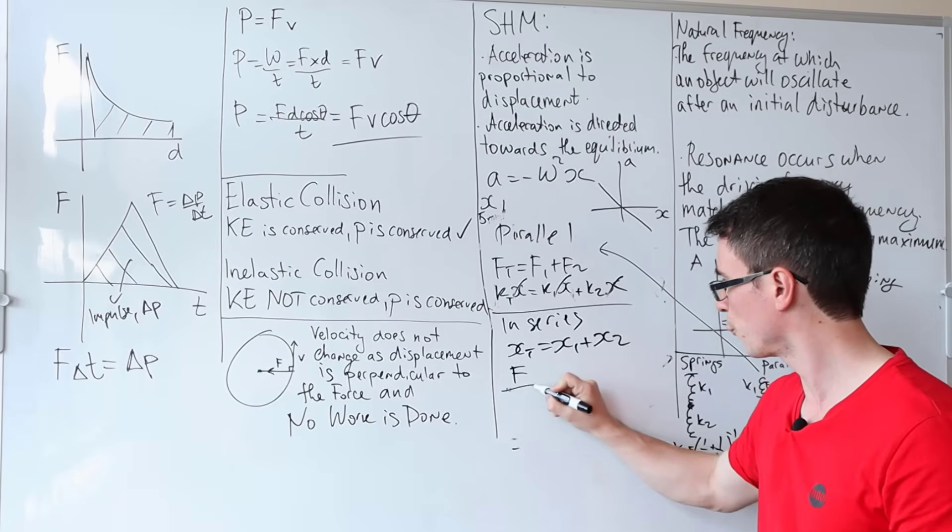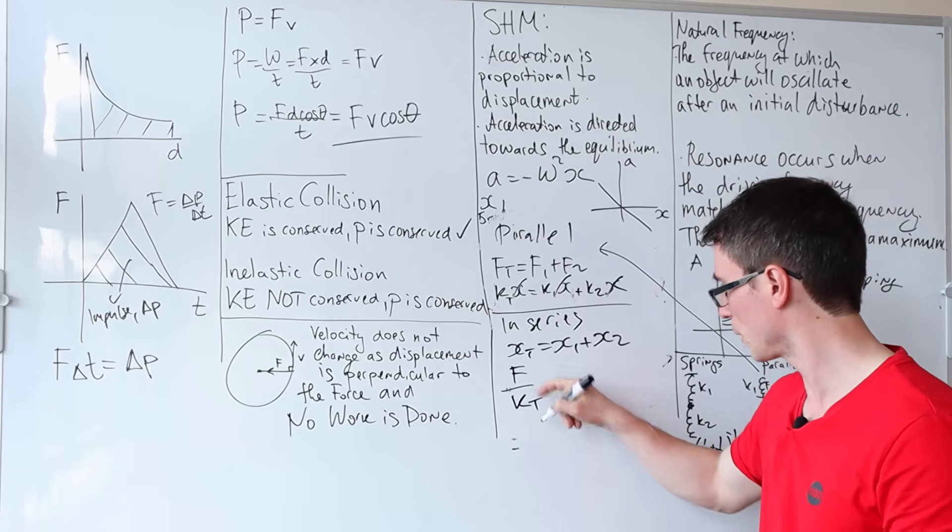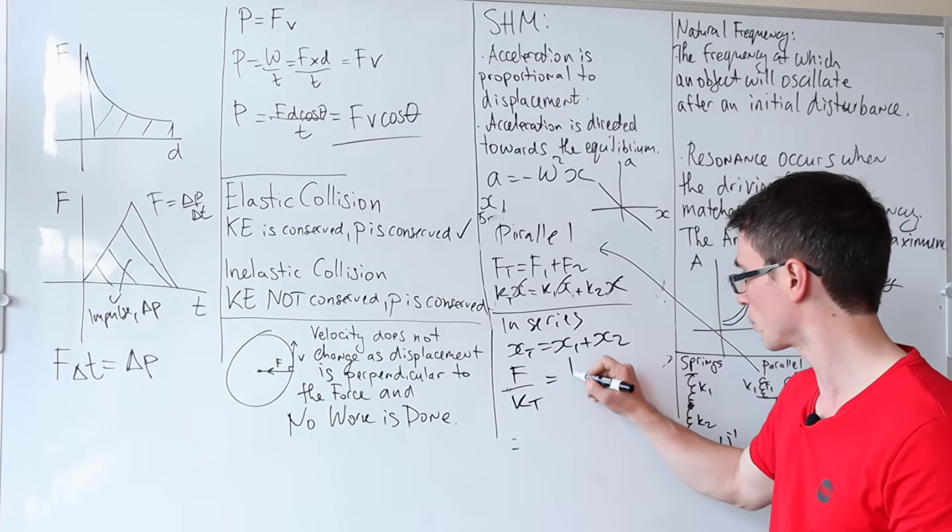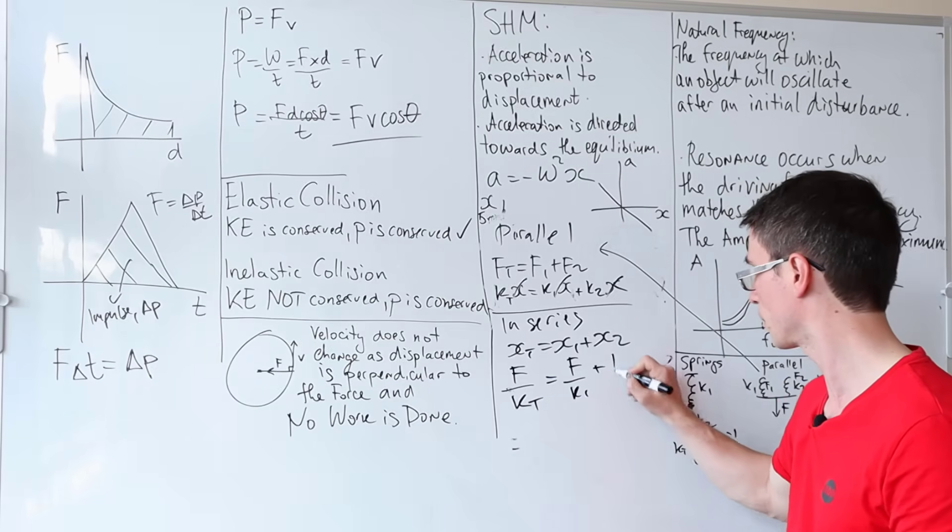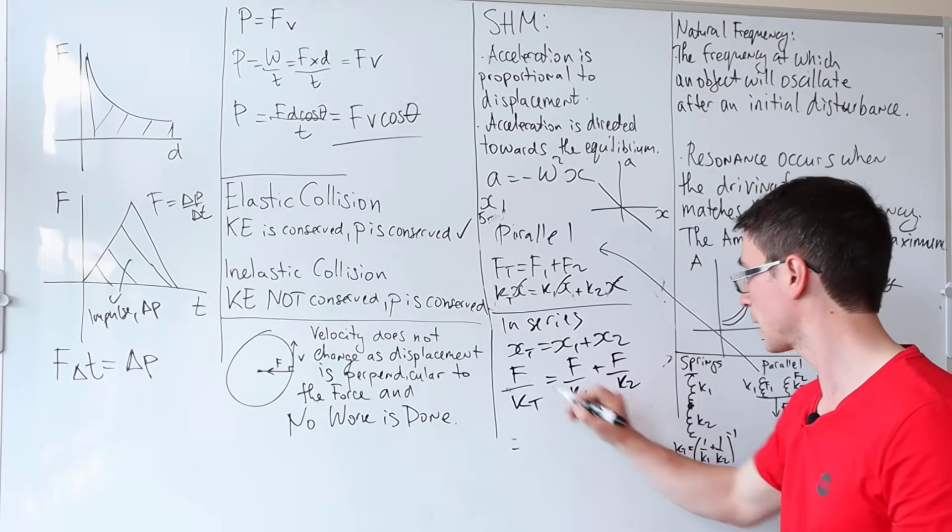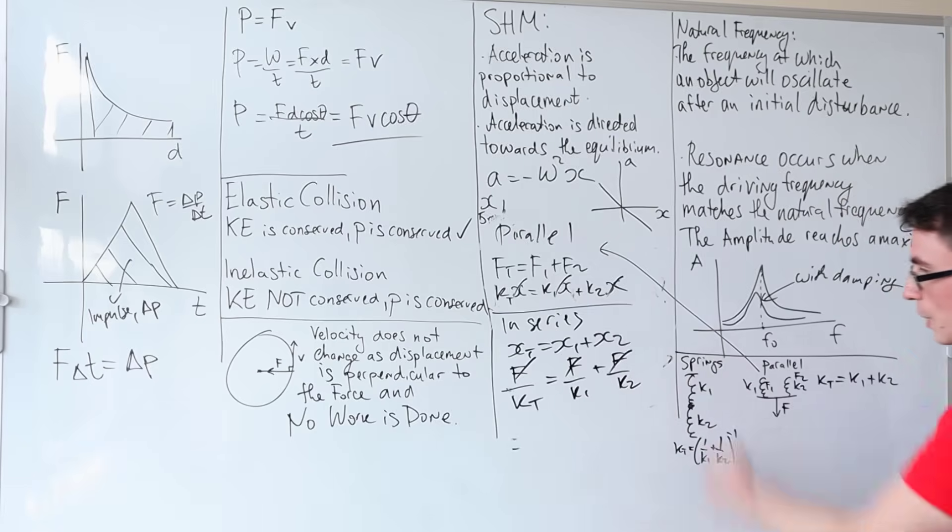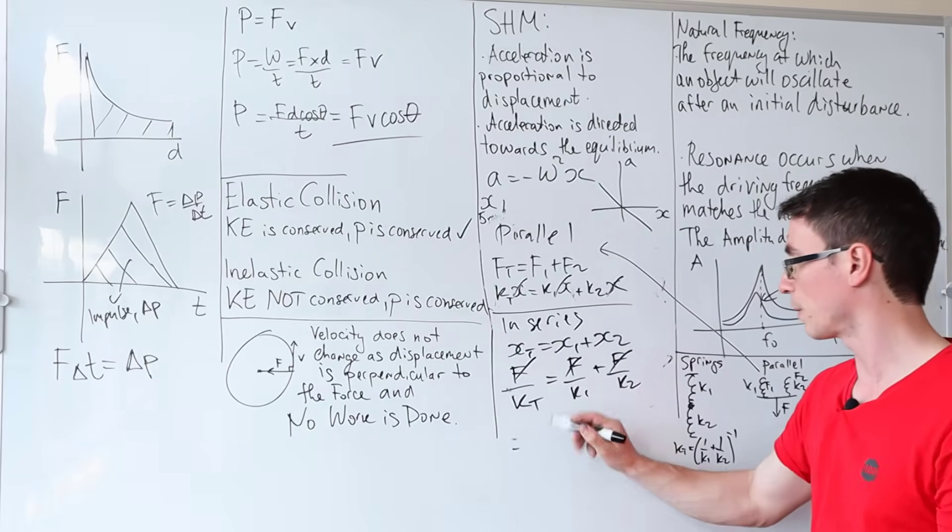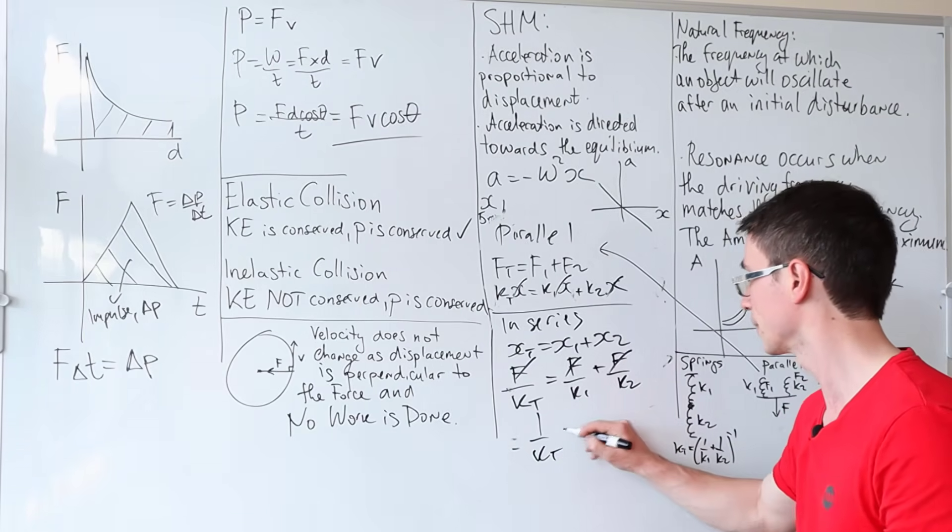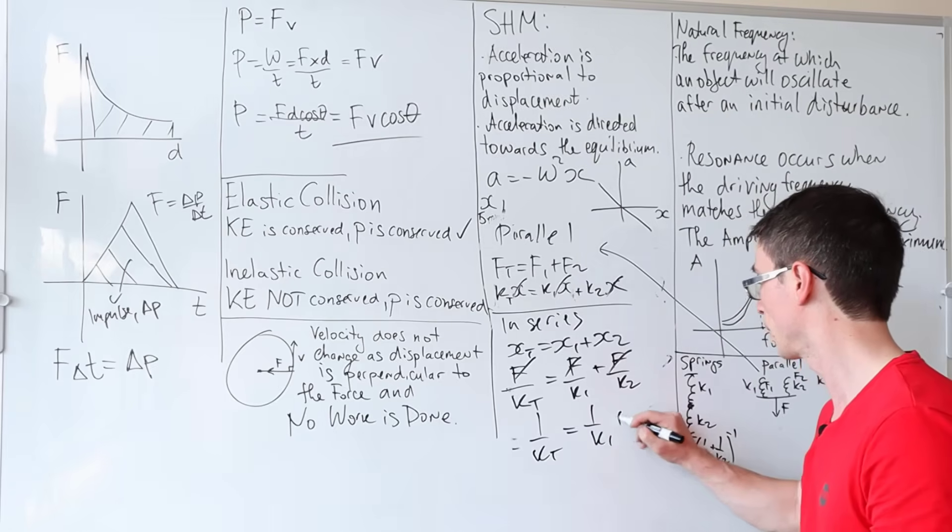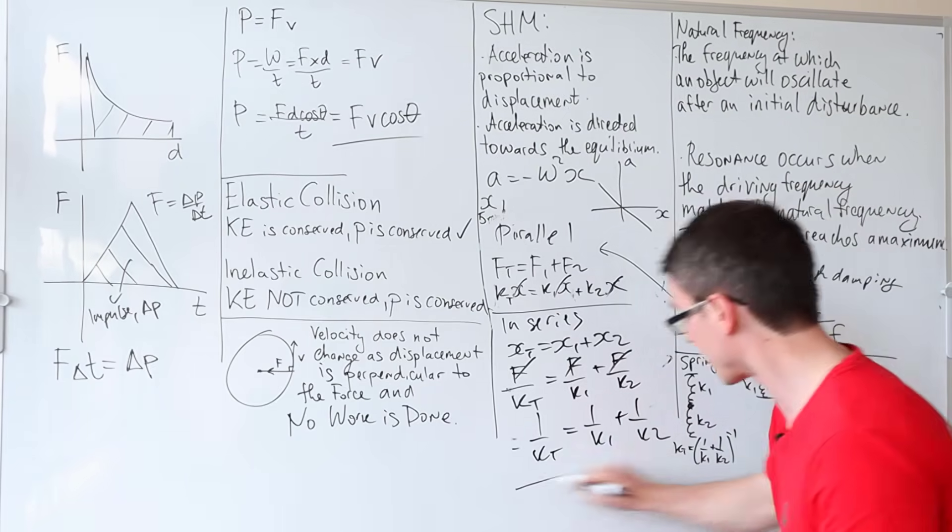Now extension is equal to force over the spring constant, which is equal to F/k₁ + F/k₂. The force is cancelled because they experience the same force. And we have proved that 1/k_total = 1/k₁ + 1/k₂.